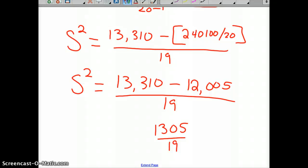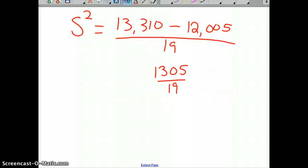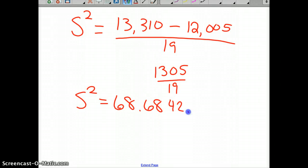And your variance is equal to 68.6842 and so on. But remember, we only need one more decimal than we have data. And like our classes are tenths, which means we had whole numbers to start with. So we know our variance is 68.7 for our sample.